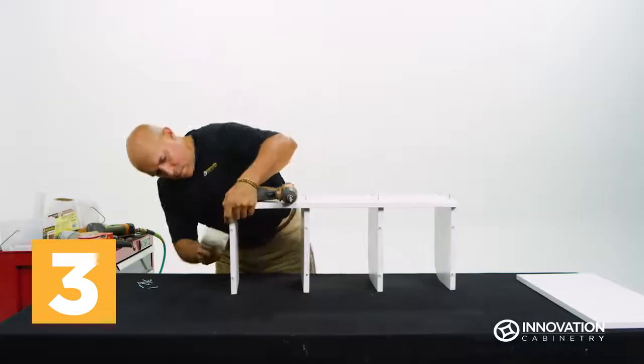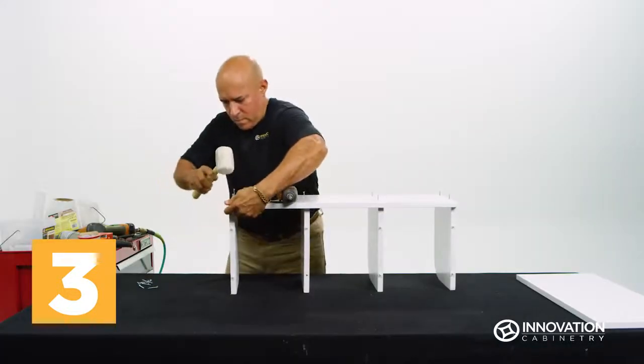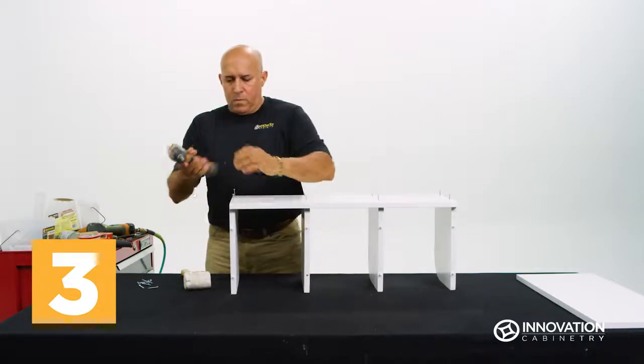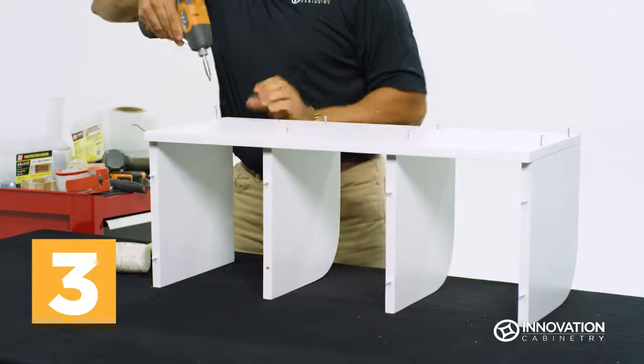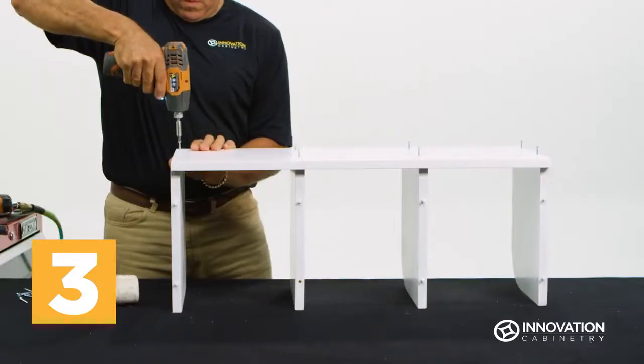It is a good idea at this point to make sure the top, bottom, and internal shelves are still flush with the shelf side and all edges and corners are even. Once checked, use a drill to secure the screws.